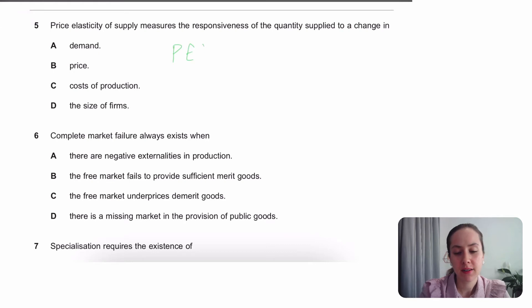Price elasticity of supply. Let's write that down. PES. Percentage change. It's always quantity on the top. Price in the bottom.